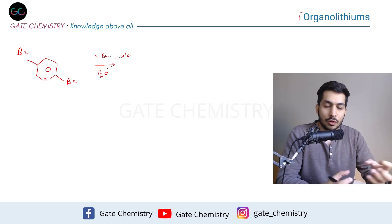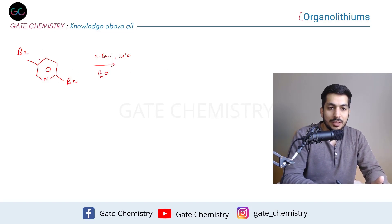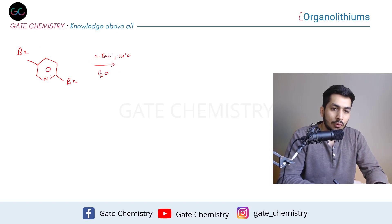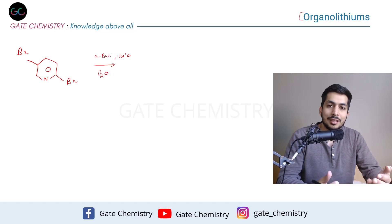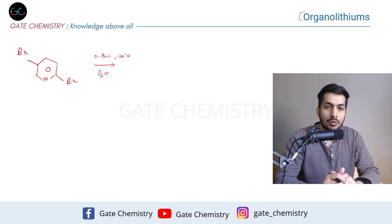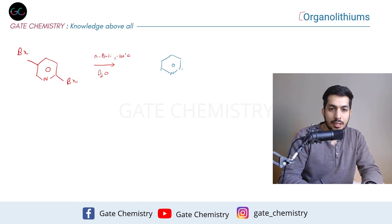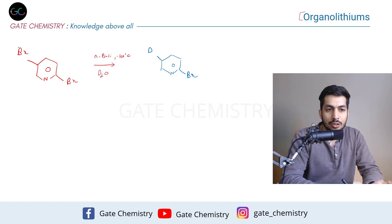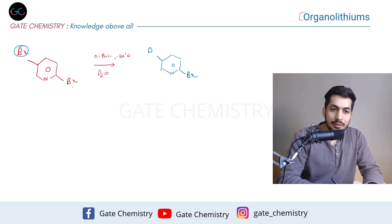There are two possible positions where lithium-halogen exchange can occur. Since we're adding one equivalent of n-butyl lithium, only one bromine is exchanged. Once lithium attaches, D₂O replaces the lithium with deuterium. The correct answer is substitution at the 5th position — deuterium at position 5 and bromine remaining at the other position.